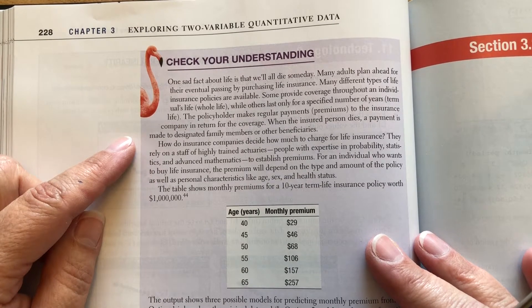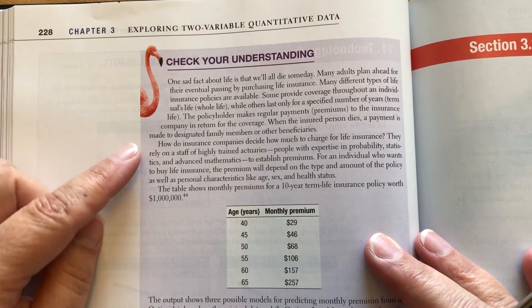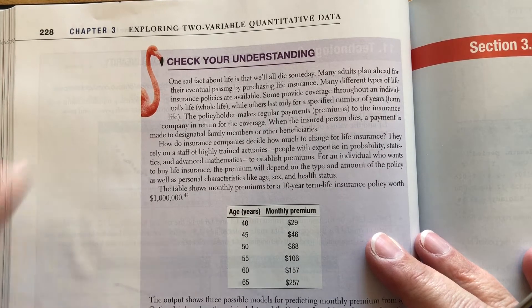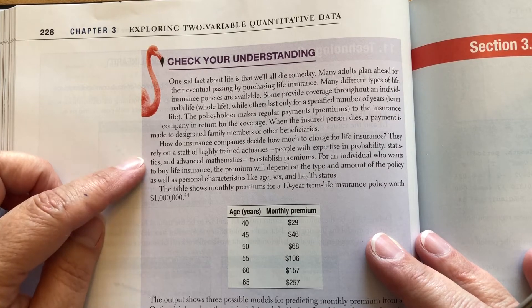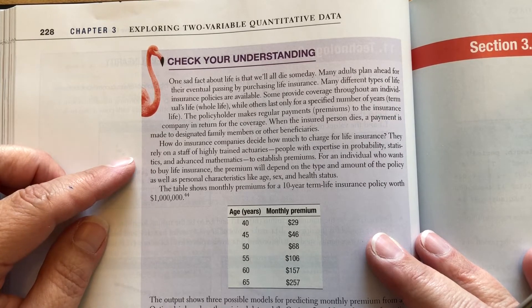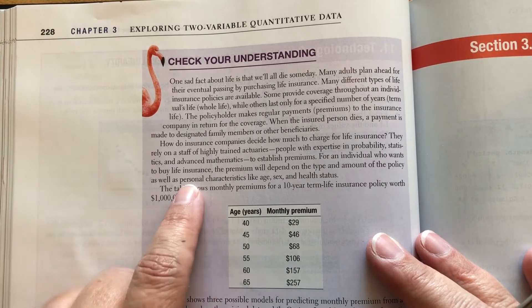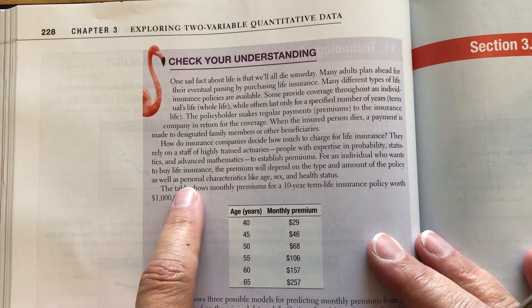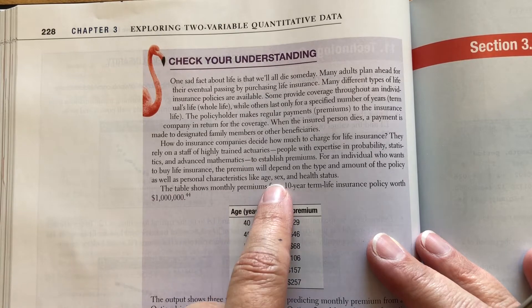How do insurance companies decide how much to charge for life insurance? They rely on a staff of highly trained actuaries, which is a lot of math, people with expertise in probability, statistics, and advanced mathematics to establish premiums. For an individual who wants to buy life insurance, the premiums will depend on the type and amount of the policy, as well as personal characteristics like age, sex, and health status.